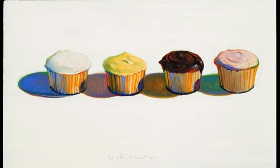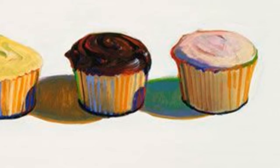Wayne Thiebaud uses form really well in his art. We can tell that these shapes are three-dimensional. These cakes are all very short cylinders. And how can we tell they're three-dimensional? Mostly through the beautiful shadows. If you look closely at the shadows in a Wayne Thiebaud painting, you will see that they are not black or gray. They are beautiful bright colors.